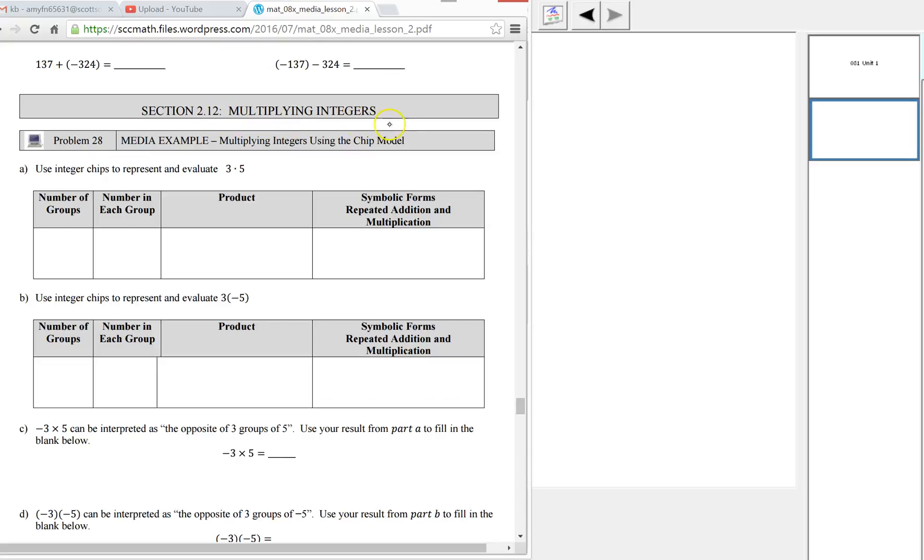In this video, we're going to look at some ways to multiply integers. Starting with the chip model, use integer chips to represent and evaluate 3 times 5. We think of the first number as the number of groups, and the second number as the number in each group.